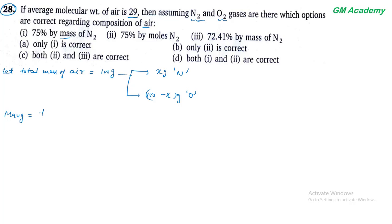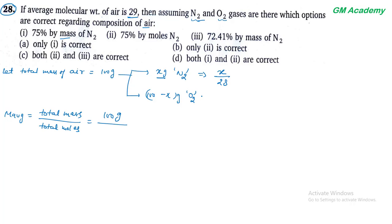Average molecular mass = total mass / total moles। Total moles = X/28 + (100−X)/32। Formula: 100 / (X/28 + (100−X)/32) = 29।